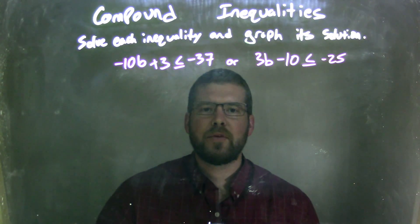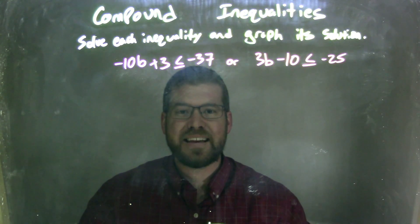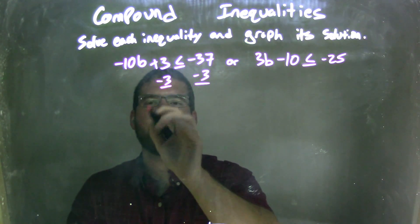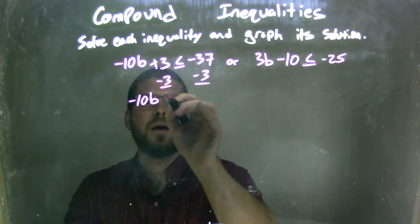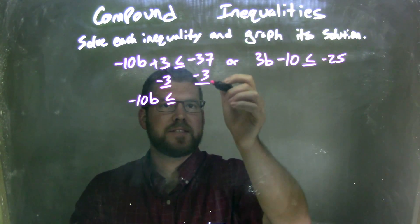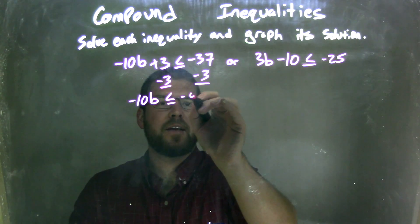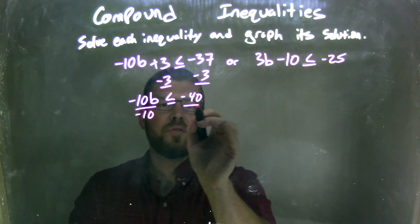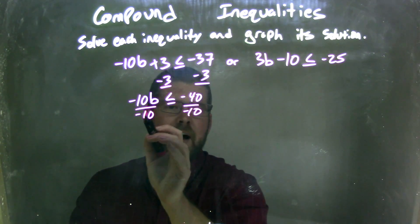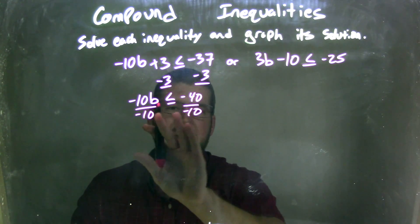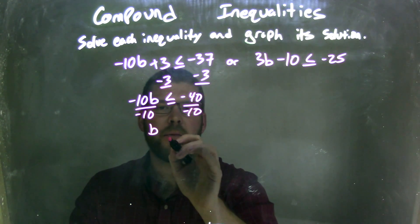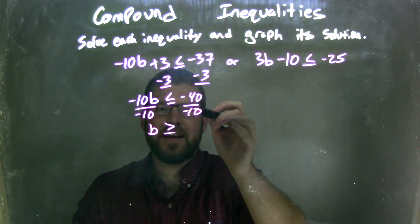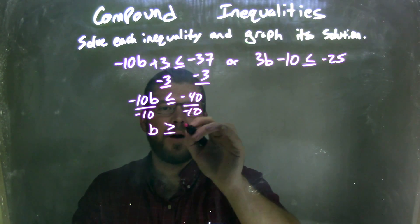My first step is I need to solve both inequalities individually. I'm going to subtract 3 from both sides on the first one, leaving me with negative 10b is less than or equal to negative 40. Now I need to divide by negative 10 on both sides, and remember when we divide by a negative the inequality flips. So we're left with b greater than or equal to positive 4.